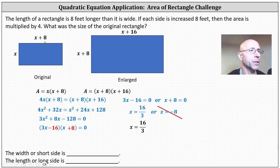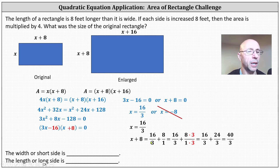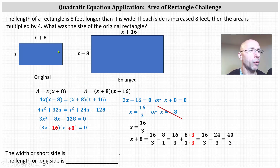To find the length or longer side, we take x and add eight. 16 thirds plus eight — or eight over one — is equivalent to 16 thirds plus 24 thirds, which equals 40 thirds. The length or longer side of the original rectangle is 40 thirds feet. So the width is 16 thirds feet and the length is 40 thirds feet.